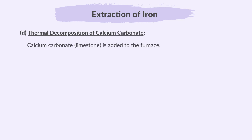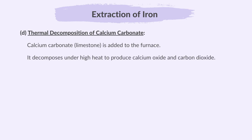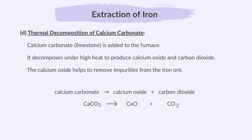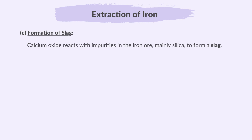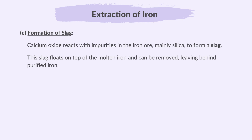Next, calcium carbonate, or limestone, is added to the furnace. It decomposes under high heat to produce calcium oxide and carbon dioxide. The calcium oxide helps to remove impurities from the iron ore. Finally, calcium oxide reacts with impurities in the iron ore, mainly silica, to form a slag. Slag is the waste material that forms from impurities. This slag floats on top of the molten iron and can be removed, leaving behind purified iron.